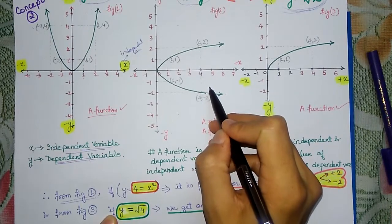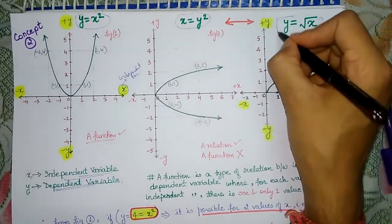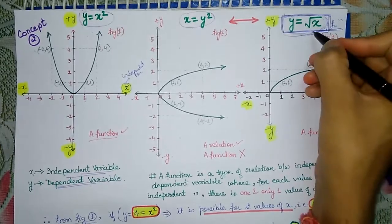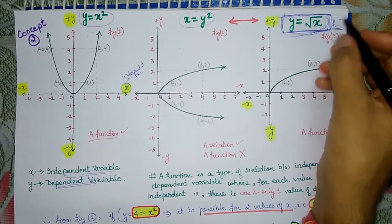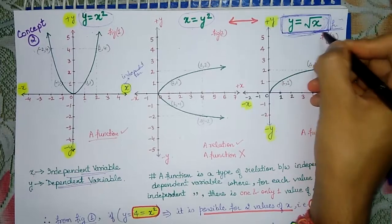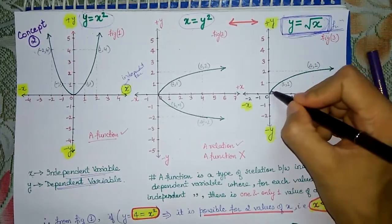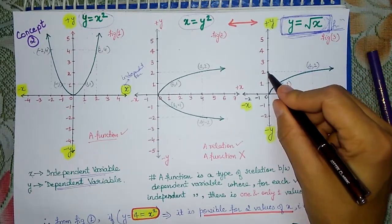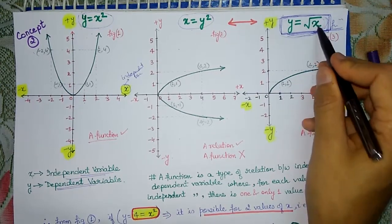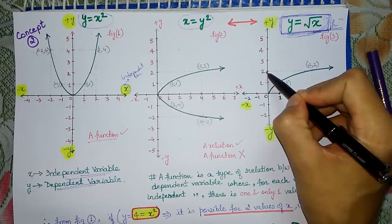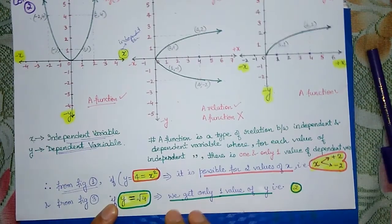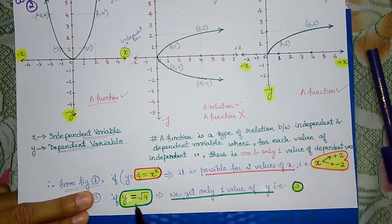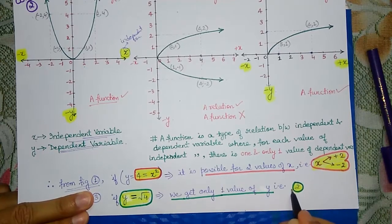If you look at the graph of y is equal to root x, it is a function and according to this graph you will only get one output. So when you solve y is equal to root 4, you get only one answer: y is equal to 2. This proves the same thing — when you say x is equal to root 4, you get only one value, which is 2.